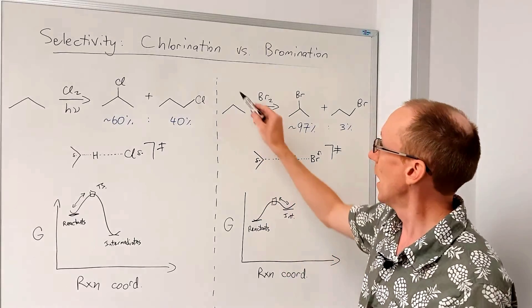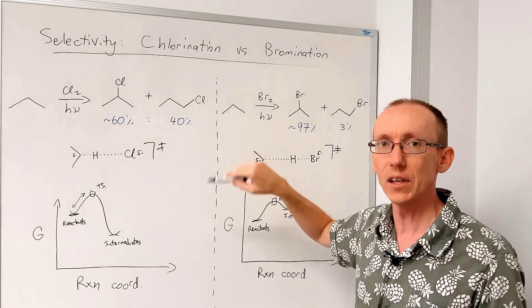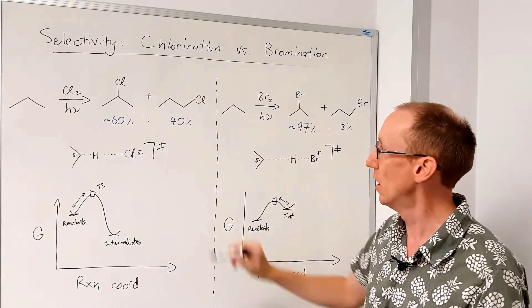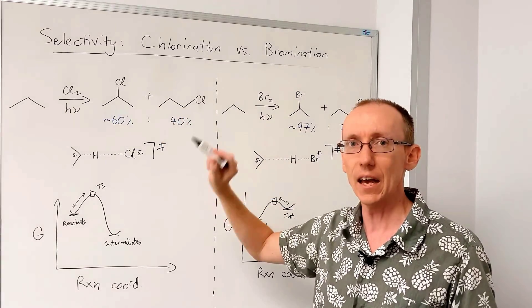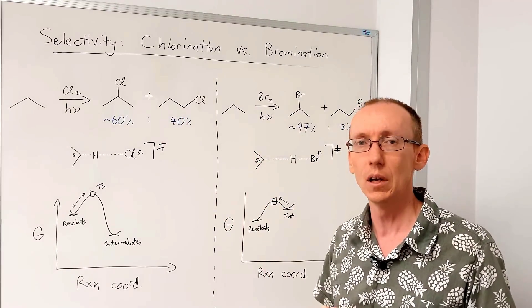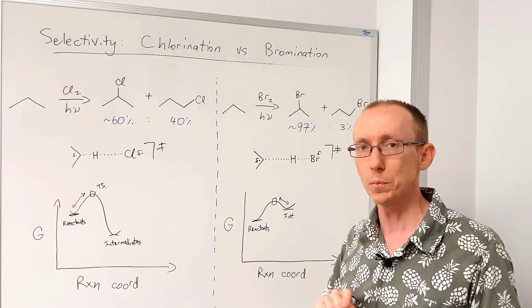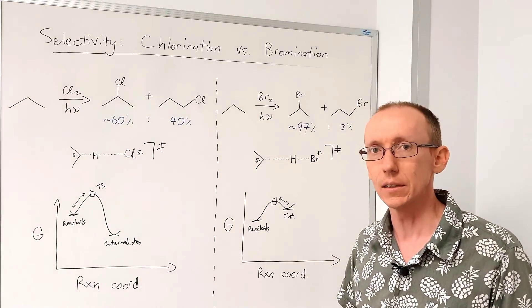So I hope that cleared up a few issues amongst selectivity and chlorination versus bromination of alkanes, where we can have different parts of the molecule form radical species. And good luck with your studies.